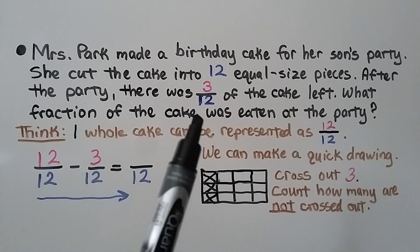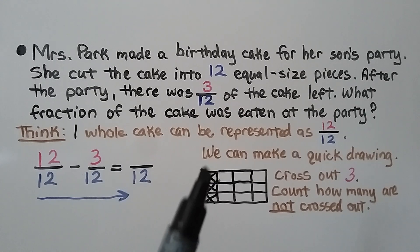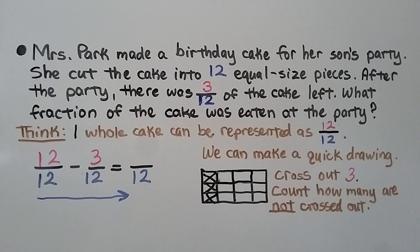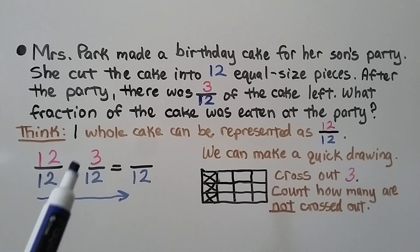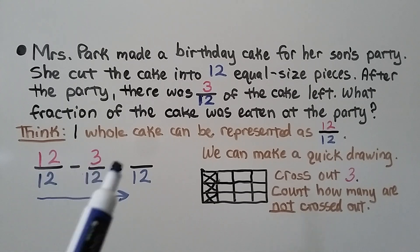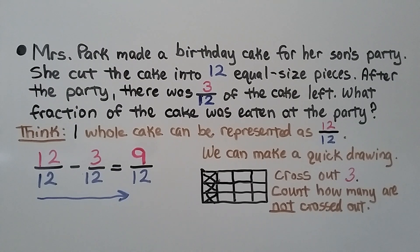There was 3 twelfths of the cake left, so we can cross out 3 of the squares and count how many are not crossed out. We have the same denominator, 12, so our difference is going to have a denominator of 12. We do 12 minus 3, which equals 9. So 9 twelfths of the cake was eaten at the party.